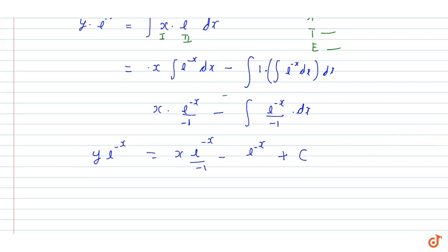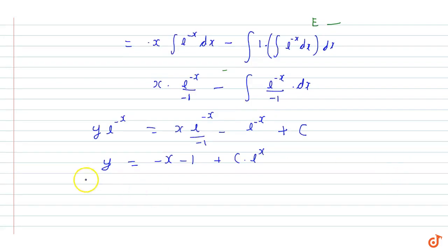So if we divide our equation by e to the power minus x, then it is equal to y equals minus x minus 1 plus c times e to the power x.